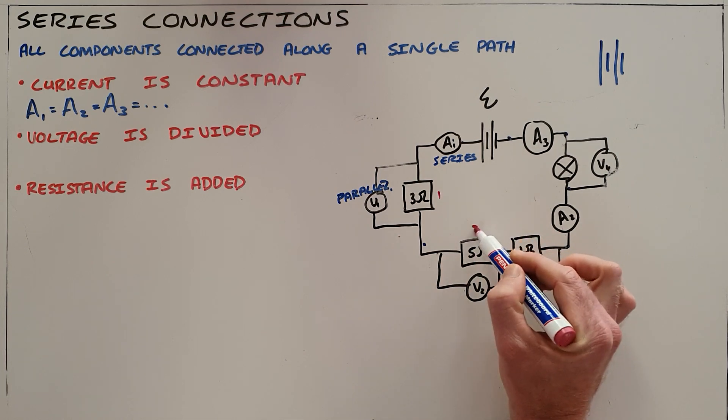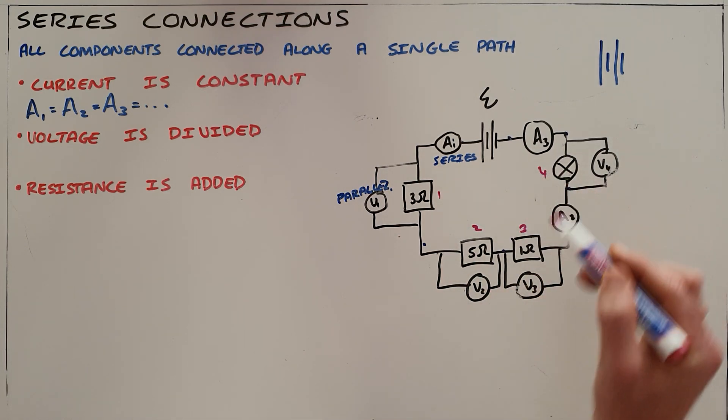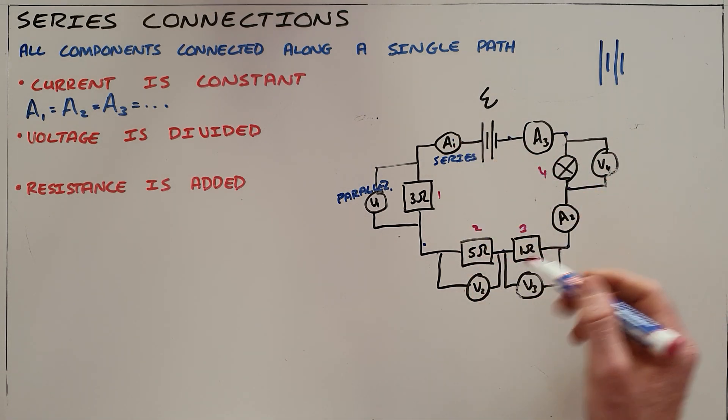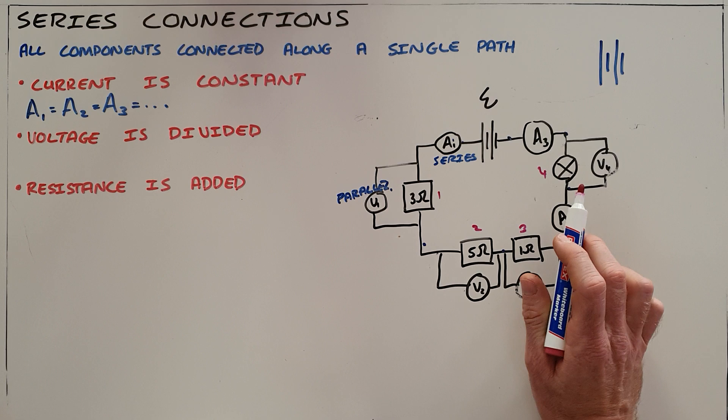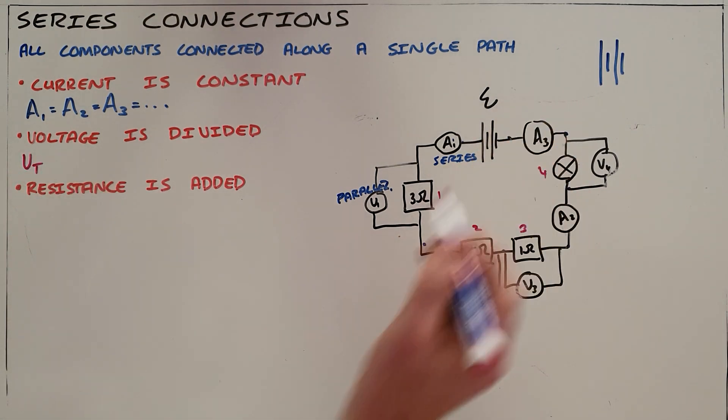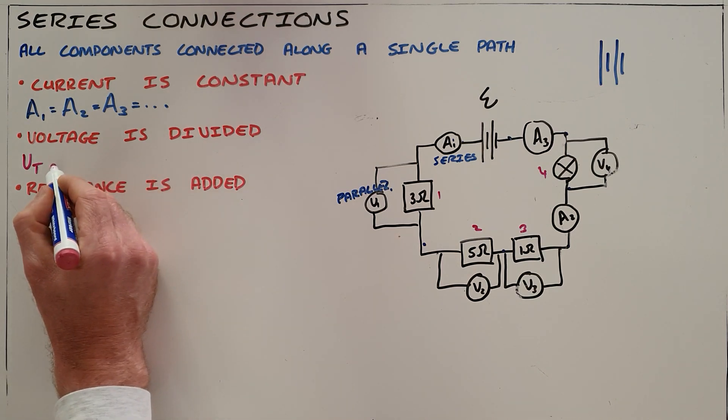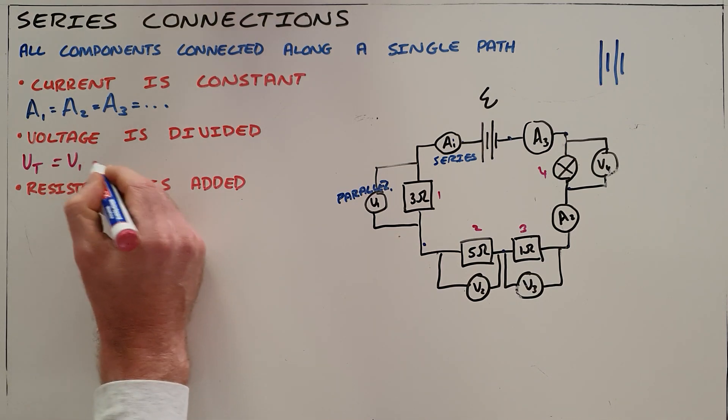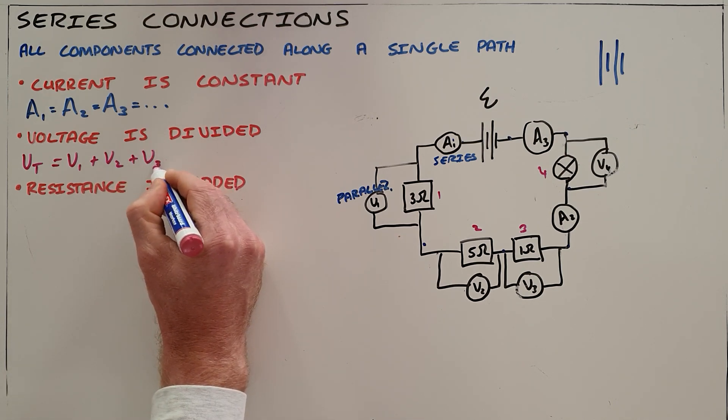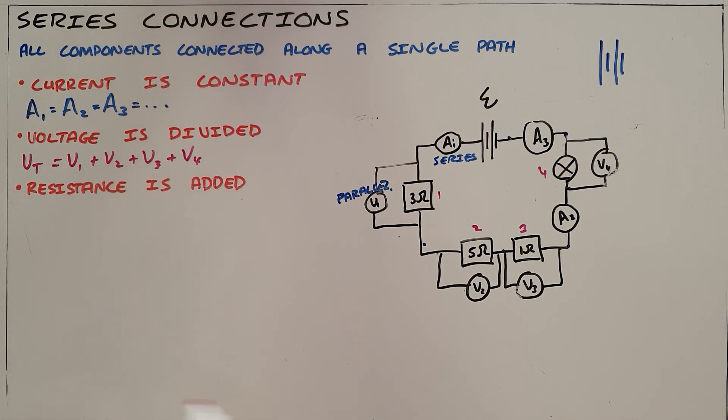So we know that we have four resistors—one, two, three, four—and the energy will be divided amongst those resistors, not necessarily equally. It depends on the amount of resistance, but we say that the voltage is divided, which essentially tells us that the total voltage provided, in this case our emf, is equal to the voltage used at each resistor, those being v1, v2, v3, and v4.